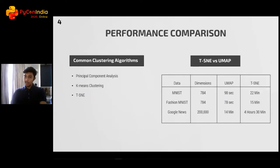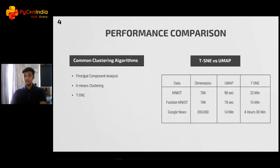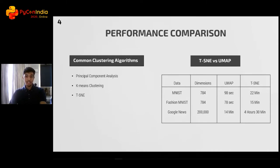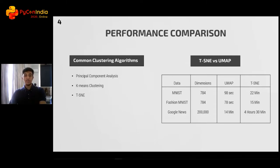In terms of performance, UMAP completely dominates the field by setting very high standards of faster and better run times. PCA and k-means are standard algorithms used in introductory clustering lessons, but they're focused on straightforward approaches. TSNE was considered the cutting-edge algorithm for clustering right until UMAP came along, consistently better than PCA and k-means in both accuracy and performance. In the table on the right, we can see how UMAP compares to TSNE: for MNIST and Fashion MNIST, it reduces 784 dimensions in just over a minute, whereas TSNE takes 15 to 20 minutes. For 200,000 dimensions, UMAP performs nearly 19 times faster than TSNE.